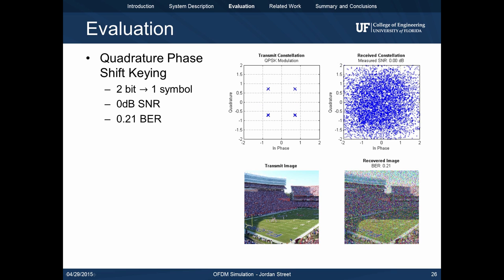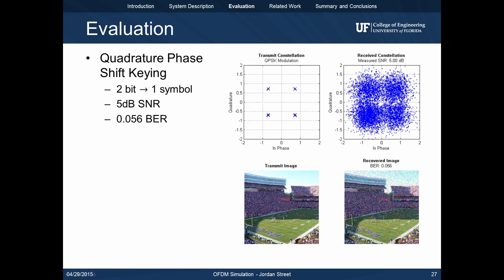Quadrature phase shift keying expands BPSK by adding two additional points along the unit circle. QPSK maps two bits to one symbol. For 0dB SNR, we achieve a bit error rate of 21%. By increasing the SNR to 5dB, we can reduce the BER down to 5.6%.